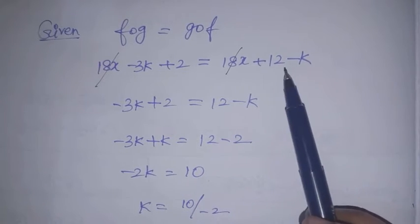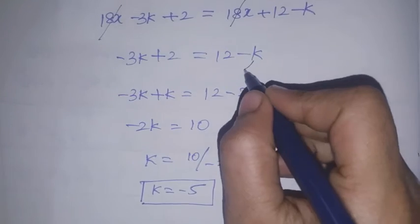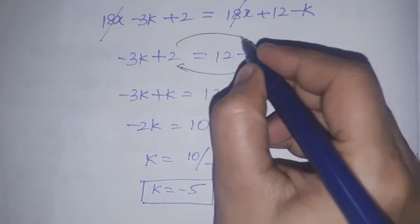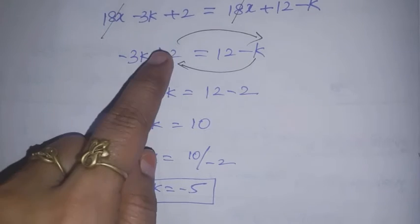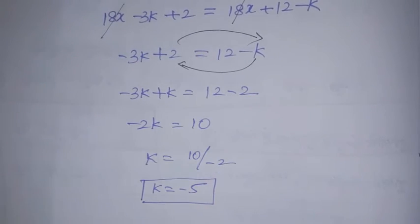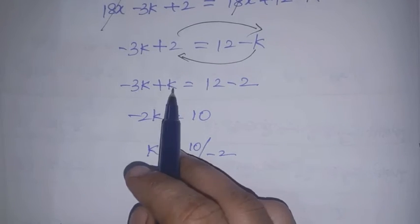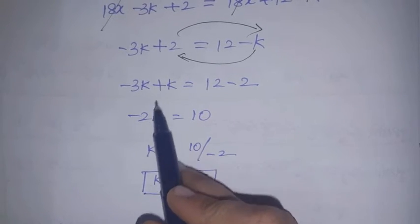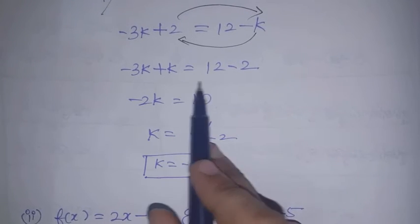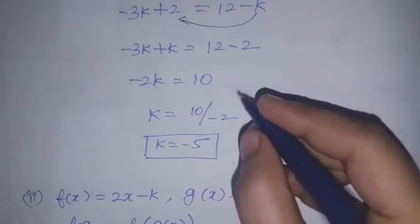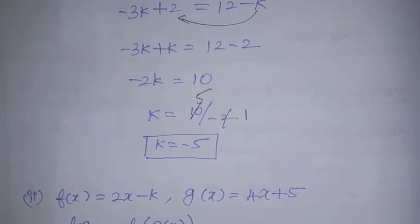After canceling 18x, we get -3k + 2 = 12 - k. Rearranging: -3k + k = 12 - 2, so -2k = 10. Dividing: k = 10 ÷ (-2), therefore k = -5.